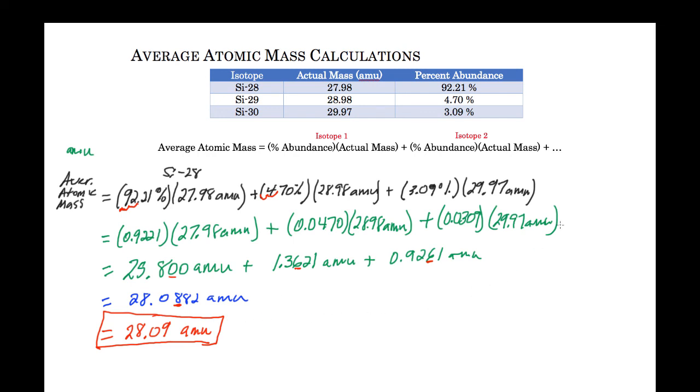As we said earlier when we made our prediction, we said that 92 percent of it was made up of silicon-28. Therefore that's why our mass is very close to 28, because there's so much of that one particular isotope.